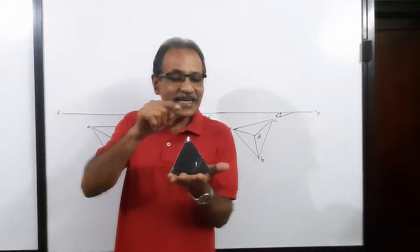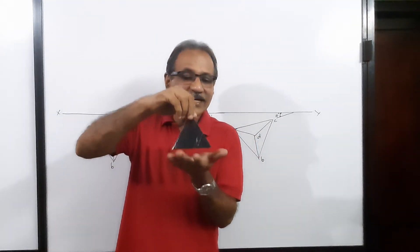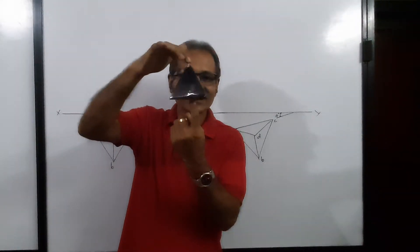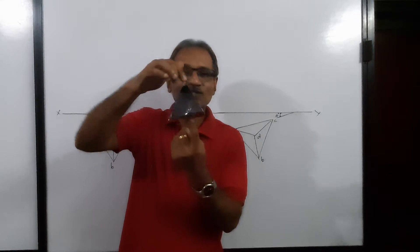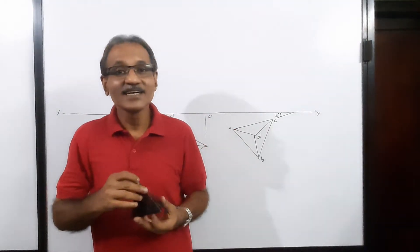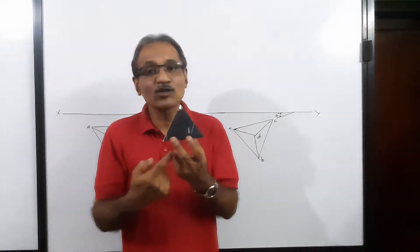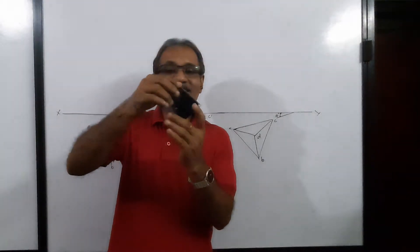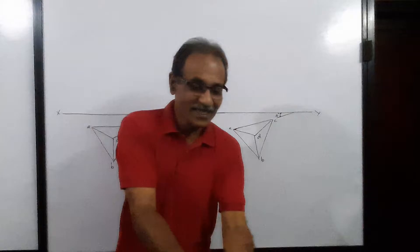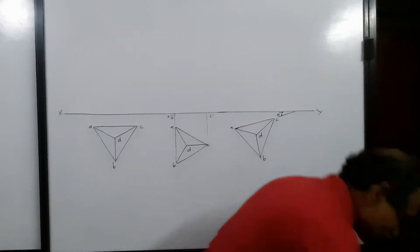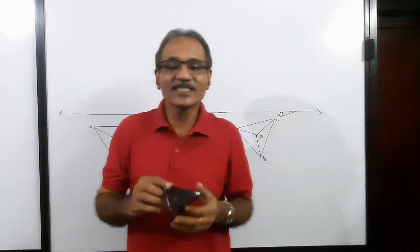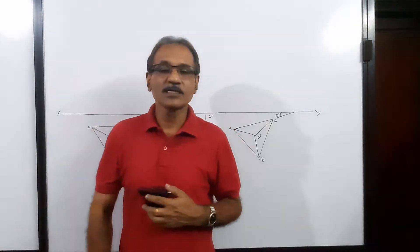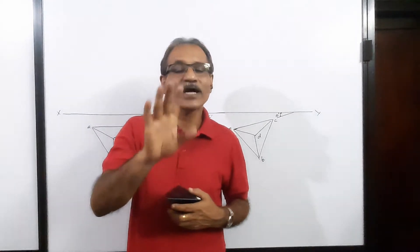A line connecting a corner to the center of the opposite triangular face is an axis. There are four such axes. To summarize: four equilateral triangular faces, four corners, and four axes.